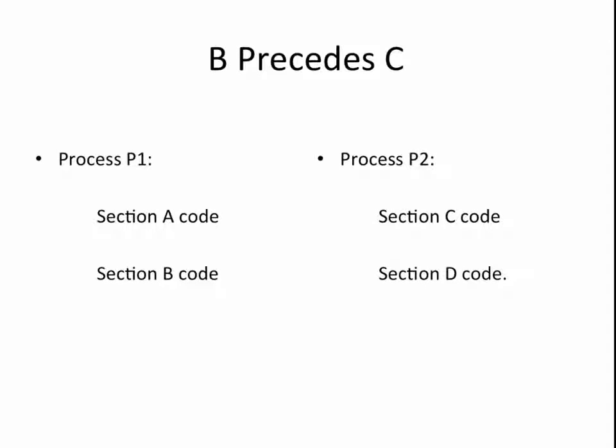Suppose that the constraint that we need to satisfy is that section B code completes before the section C code begins execution. We can achieve this using semaphore S by first initializing the semaphore to zero in shared memory. Next, in order to ensure that section C code does not begin running too early, we add a wait(S) call before the section C code. As long as S equals zero, the code in process P2 will not get to run.